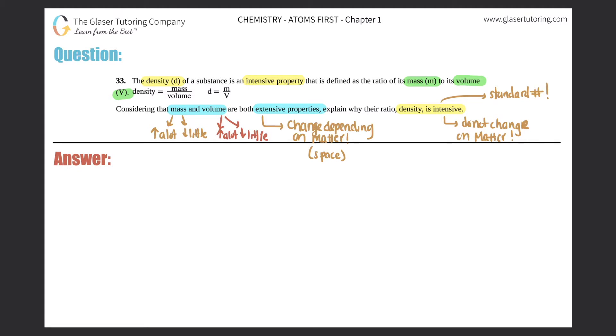So density is a standard, right? The density of water will always be one gram per centimeter cubed. The melting point - a substance melts at one specific temperature. A boiling point - a substance will boil at one specific temperature. So they're all standard numbers. But anything that can change are extensive.